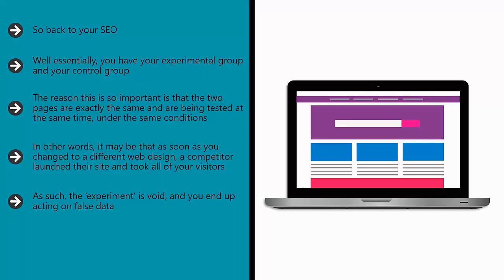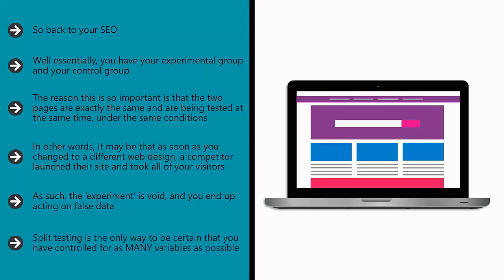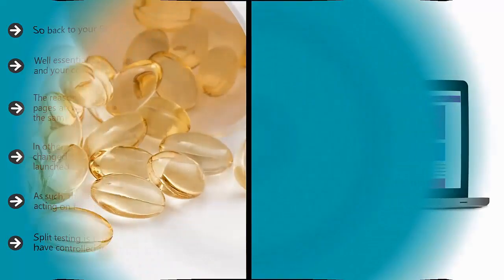Likewise, if you were to simply adopt some changes in your next article, you couldn't know for certain that any boost or drop in performance wasn't simply due to the content of that article being better or worse. Split testing is the only way to be certain that you have controlled for as many variables as possible.